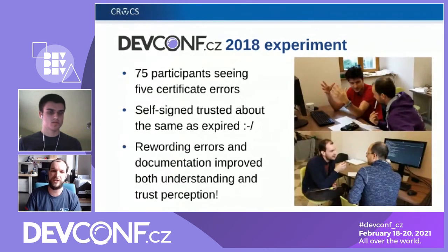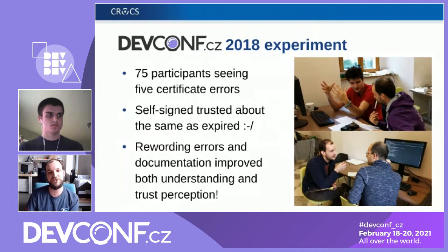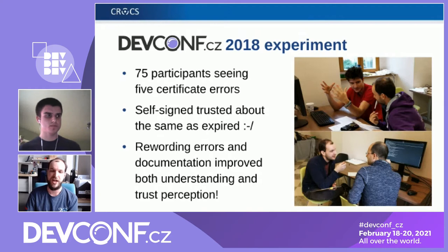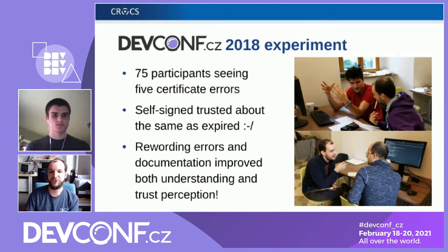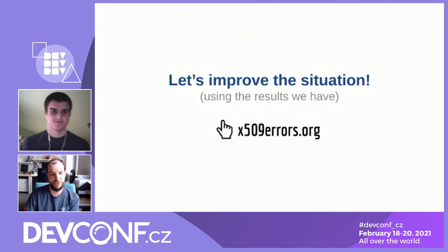The next year in our experiment, we showed them errors of certificates — five different errors — and asked how much they trust the certificate with those particular errors. It turned out that the opinions were not what we would have hoped for as security engineers. That brought us to thinking: what can we do about it?